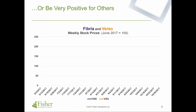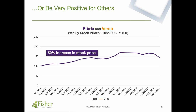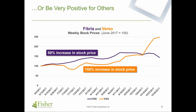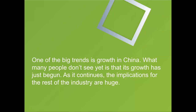For others, global implications can be very positive. This chart shows an index of weekly stock prices for Fibria — the largest market pulp producer in the world — and Verso, the largest North American coated free sheet producer. Starting in June 2017, Fibria saw a 50% increase in stock price, and Verso an even more dramatic 150% increase.